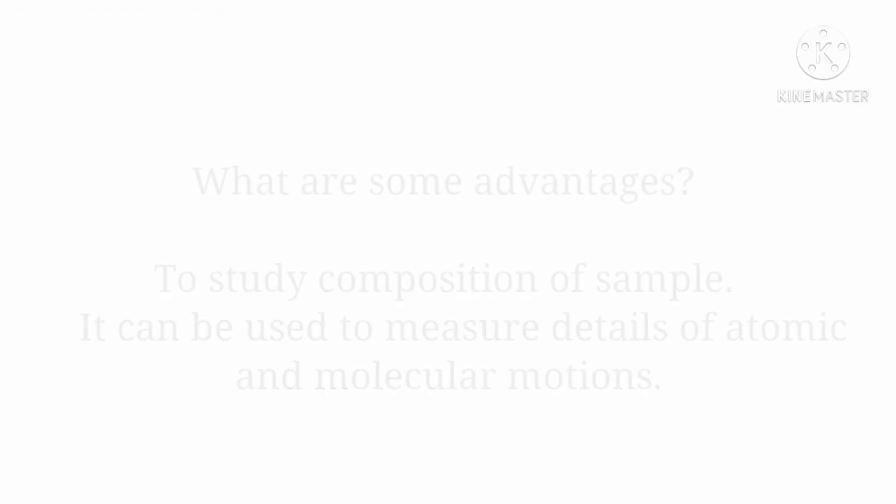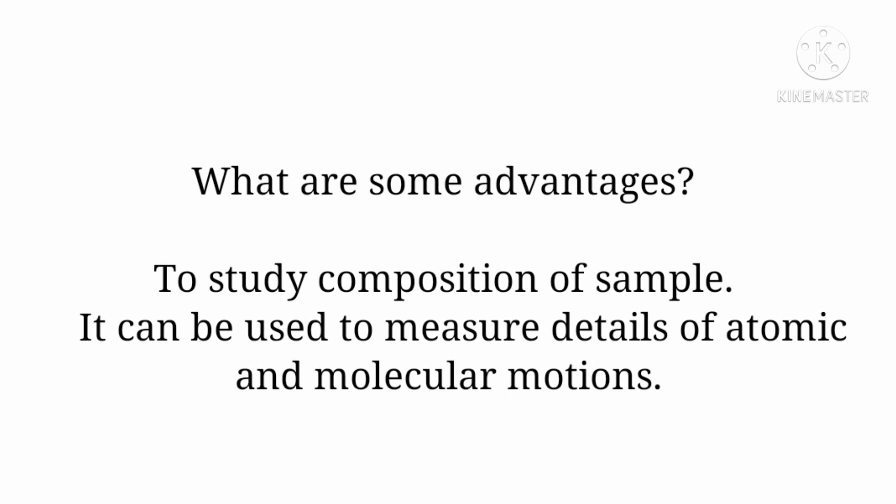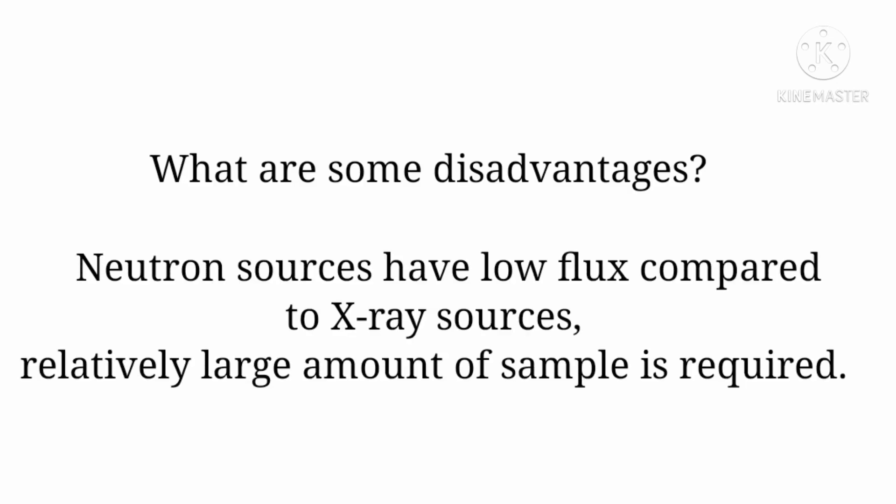Now let's see some basic Q&A of this technique. First, what is the advantage of using this technique? It is used to study the composition of metal and to measure details about the atomic and molecular motions. What are the disadvantages of this process? Neutron sources have low flux compared to x-ray sources. Secondly, it requires a relatively large amount of sample for neutron scattering measurement.